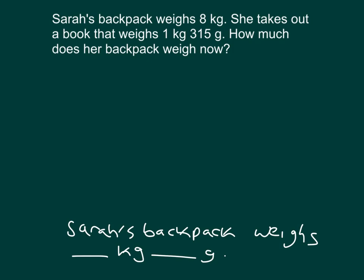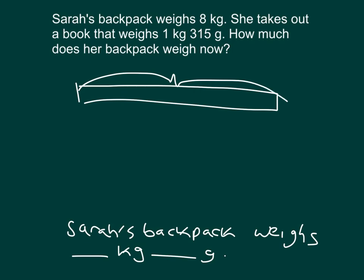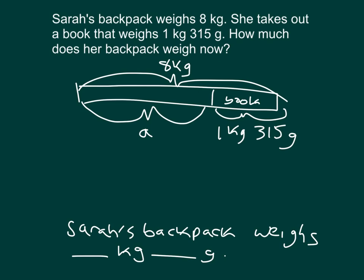So that's how I'll write our focused answer. Let's draw a tape diagram. This is Sarah's backpack, and it starts, and it weighs 8 kilograms. It looks like she takes out a book that weighs 1 kilogram, 315 grams. So from that backpack, we're going to take out that book that weighs 1 kilogram, 315 grams. So it looks like I'm solving for this here of how much her backpack weighs now. So I'm going to call that a for my variable.